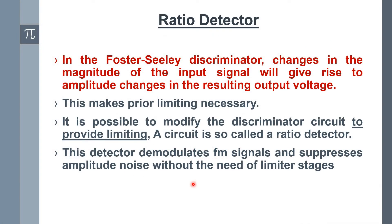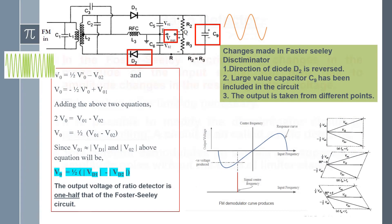In this ratio detector, additionally compared with the Foster-Seeley discriminator, it will act as an amplitude limiter. To perform that particular operation, we made three different changes in the Foster-Seeley discriminator. This entire circuit is almost 80% similar to the Foster-Seeley discriminator. The first change is: the direction of diode D2 is reversed.